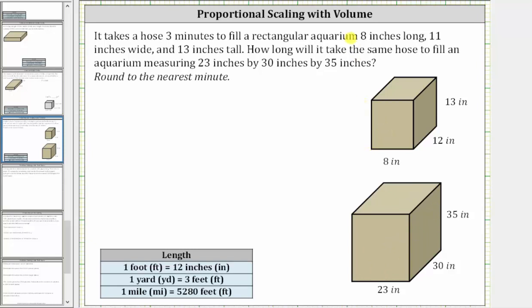To determine the rate at which the aquarium is being filled, we first have to find the volume of the smaller aquarium. We know the volume is equal to the length times the width times the height, and therefore the volume is equal to eight inches times 12 inches times 13 inches, which is equal to 1,248 cubic inches.